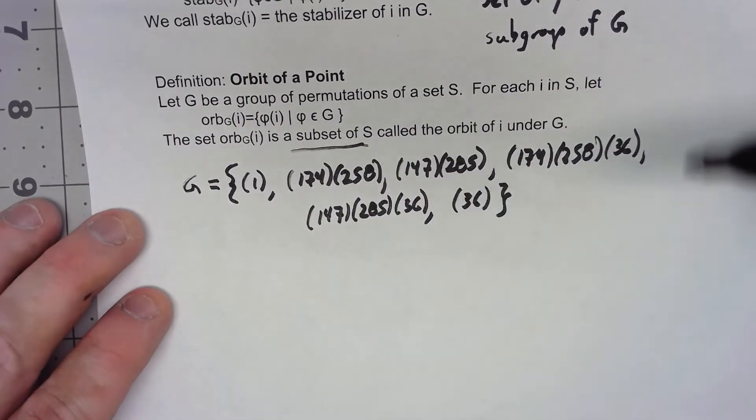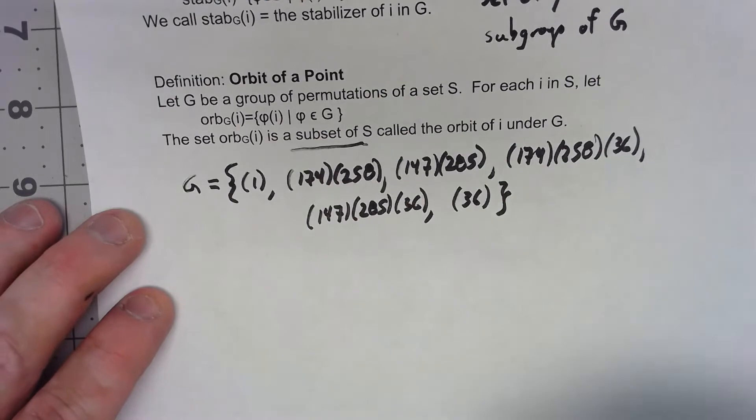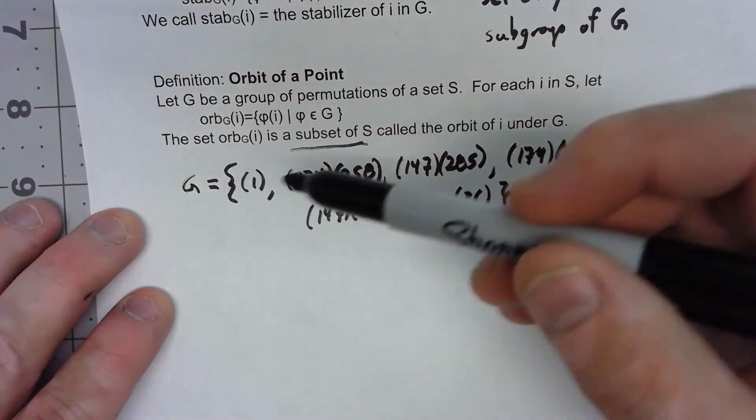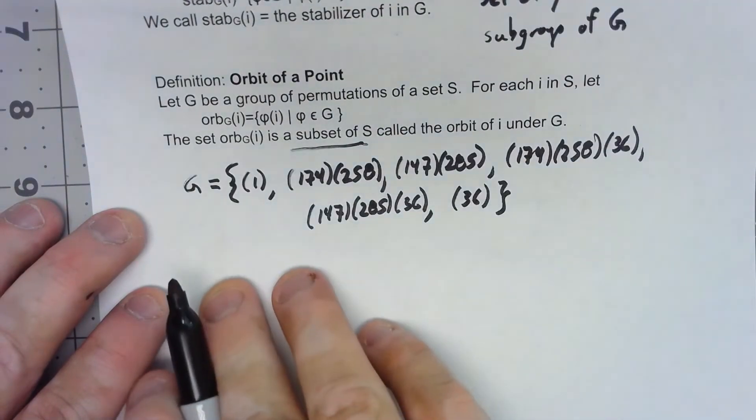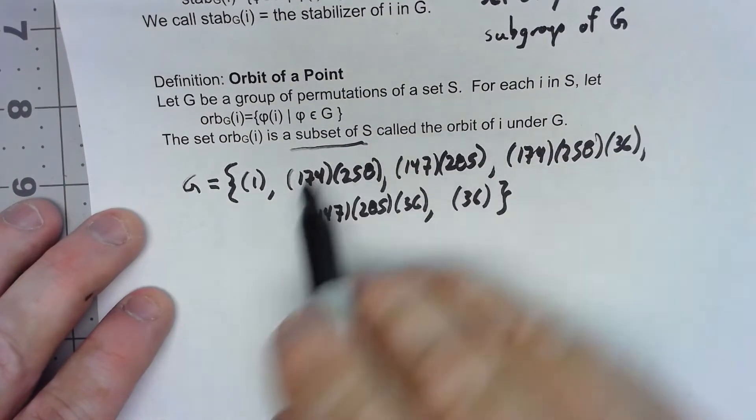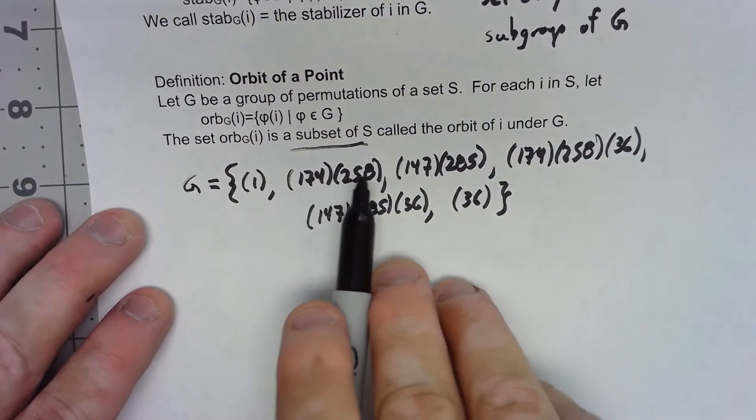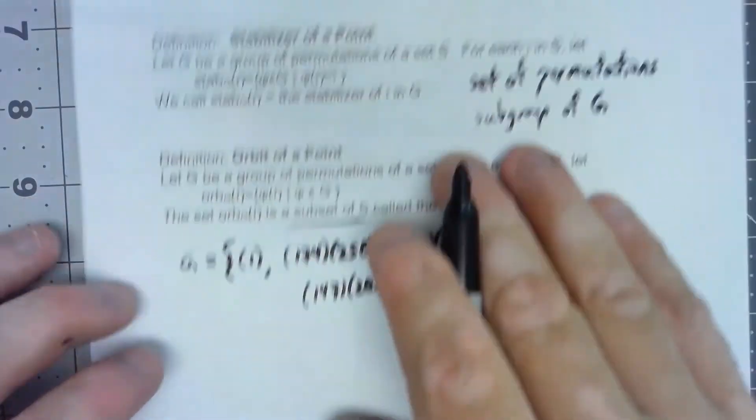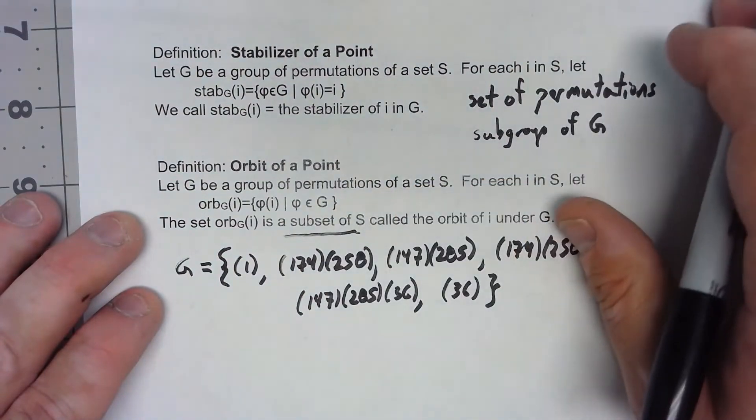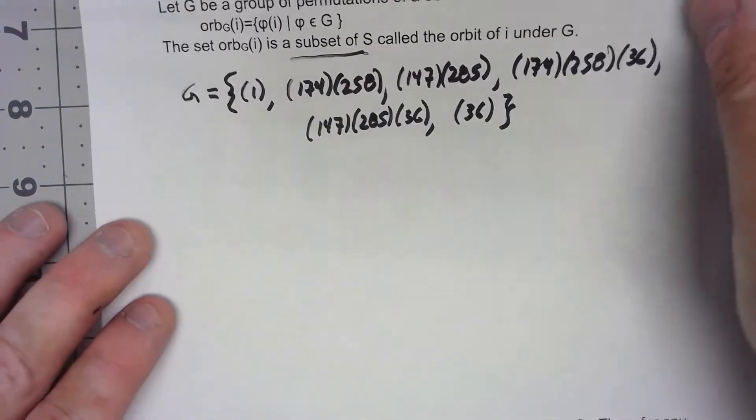That is a subgroup. I'll leave it to you to verify that. So these things act on the set 12345678. So the things I can find the stabilizer and orbit of are those elements 12345678.